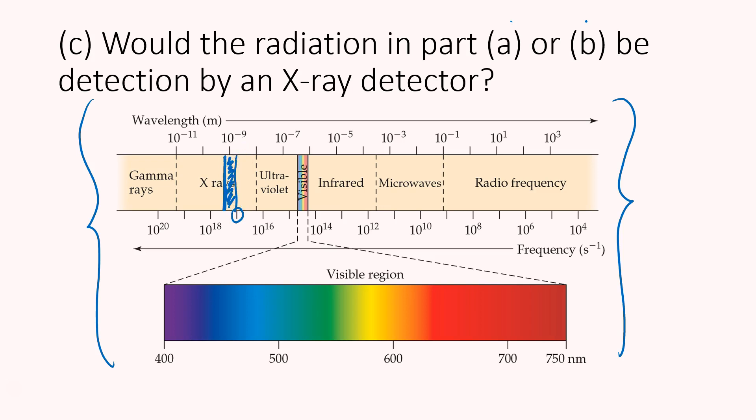So I think, would the radiation in Part A be detected by an x-ray detector? Yes. In Part A, yes. Because that radiation did fall within this x-ray region. In Part B, we had a frequency of 10 to the 11th, which puts us here in the microwave region. So in Part B, no, that radiation would not be detectable by an x-ray detector. So that's all for this video. Hope it helped a little bit, and thanks for listening.